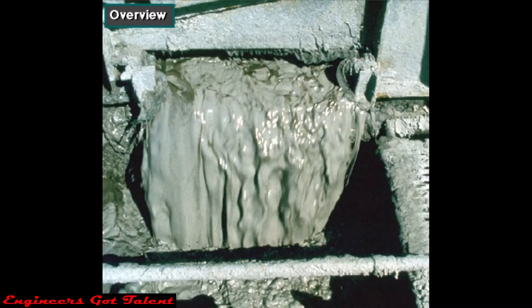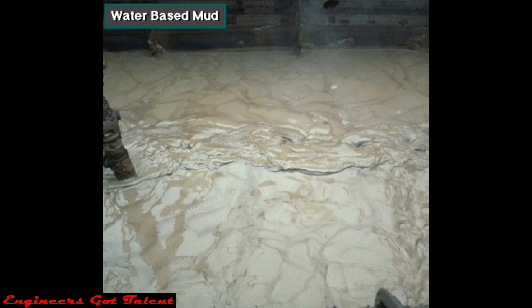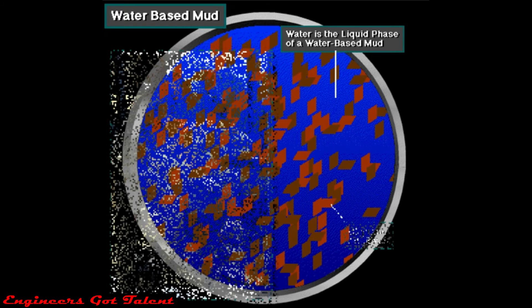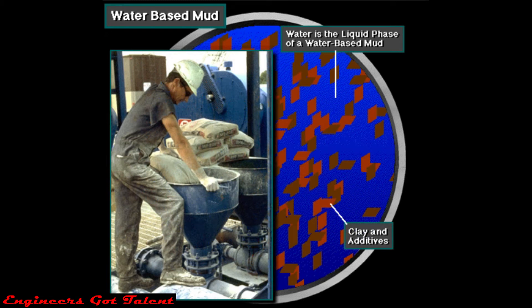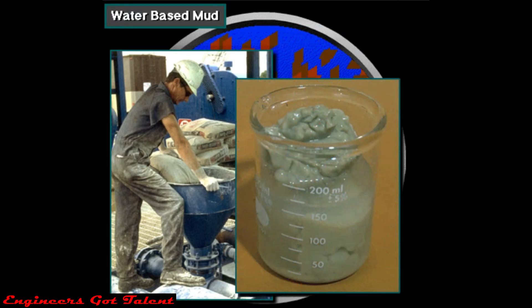The mud is made up with clay and other additives that give it desirable properties. Often water is the base of drilling mud. Water makes up the liquid part or phase of a water-based mud. Crew members put clay and special additives into the water to make a mud with the properties needed to do its job well. For example, clays give it thickness or viscosity.